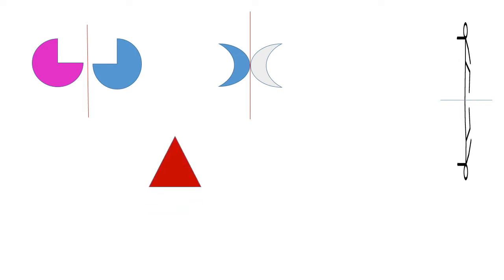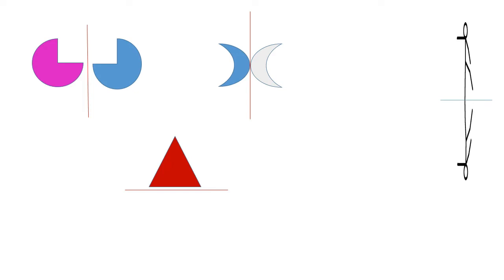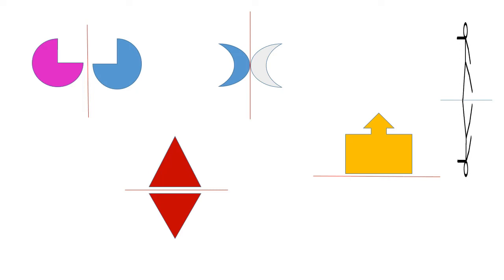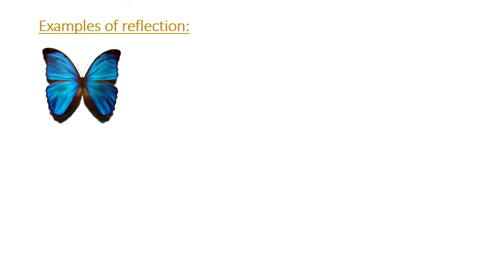Another figure — if I give you a triangle with a horizontal line of reflection and ask you to draw the reflected image, it will be like this. And for the fourth figure, again with a horizontal line of reflection, the reflected image will be formed like this.